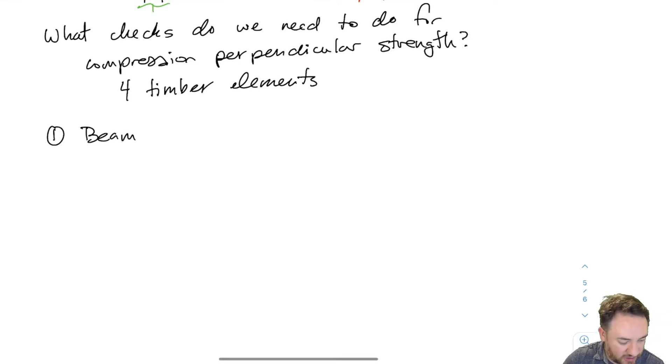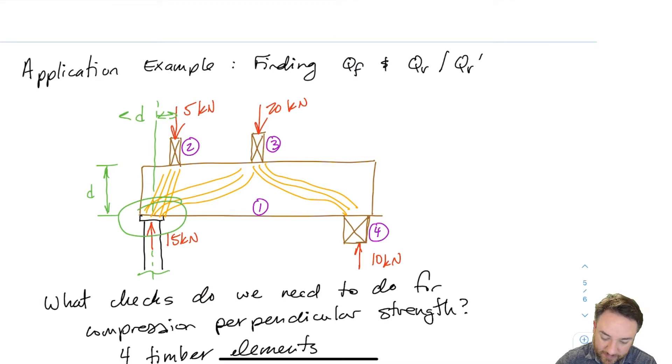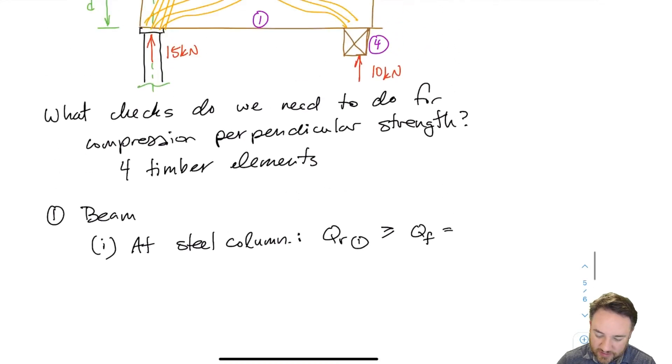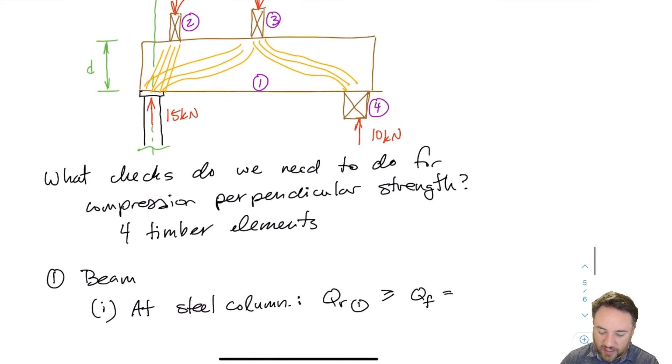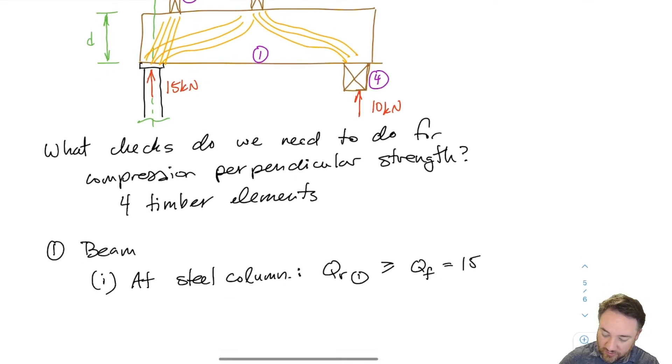The first one is, I need to check the resistance of the beam sitting on top of the steel column. That's in this location right here. So at that steel column, I have to check the direct resistance. This is just the first check I'm doing. Which is just the direct local resistance of the steel column pushing on the beam. And with what load with the full load of the steel column. So the steel column is applying a load of 15 kilonewtons to the bottom of the beam. So the qf that I'm checking here for my qr is 15 kilonewtons. And this qr is the all applied loads qr. So this is just the local one.